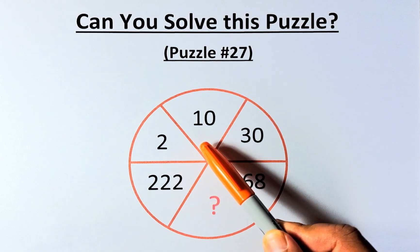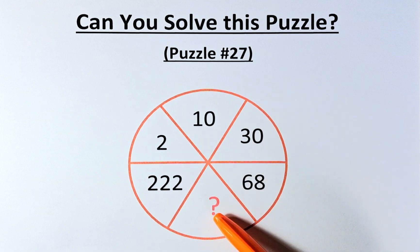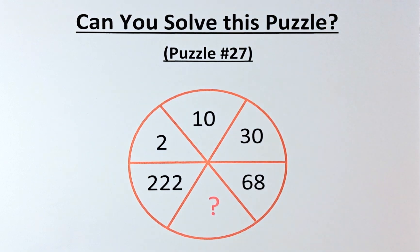The numbers in the puzzle are as follows. It starts with 2 followed by 10, 30, 68, a question mark and 222.